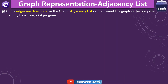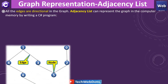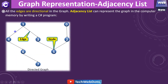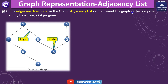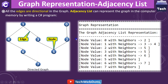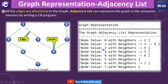How does an adjacency list look if we are implementing the graph in C#? All the edges are directional in the graph I am going to use — there is no weight but it is a directional graph with nodes and edges. An adjacency list can represent the graph in computer memory, and I will discuss the coding piece immediately in the next part of this graph data structure series.